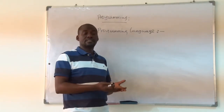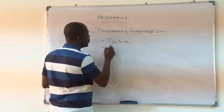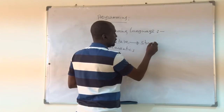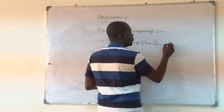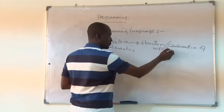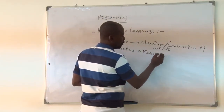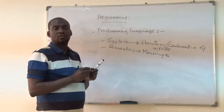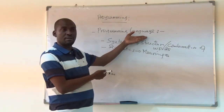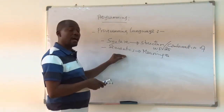We know that any language in this world has its own syntax and its own semantics. Syntax refers to the structure or combination of words, while semantics refers to the meaning of those words. The same applies to programming languages — they have their own syntax and their own semantics.